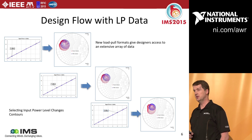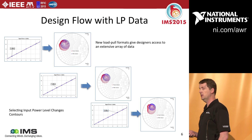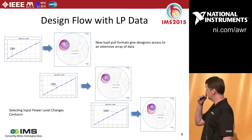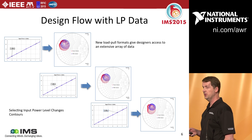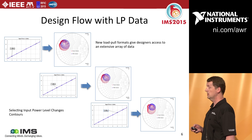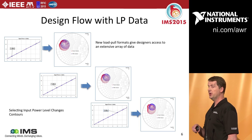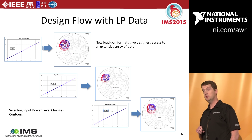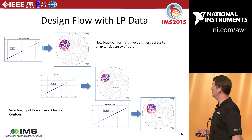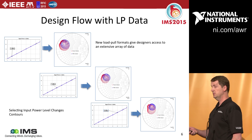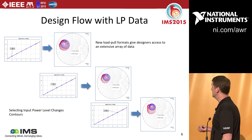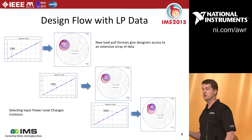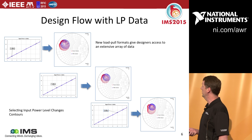Some examples of what you can do with the new load pull file formats in our software: on the left is a rectangular graph of input power versus index. We have a marker which points to a specific input power, and we're plotting the contours for that power level. Move the marker, and you get another set of contours corresponding to that power level — something you couldn't do with the single-point load pull files.